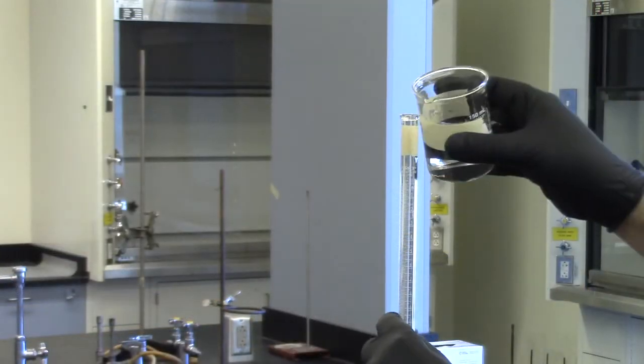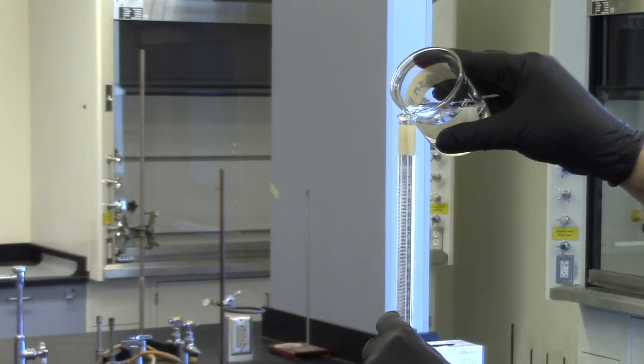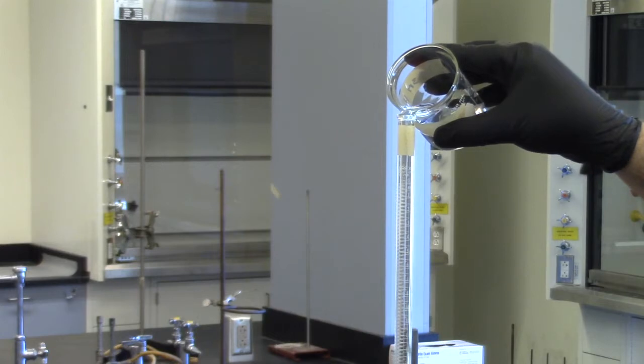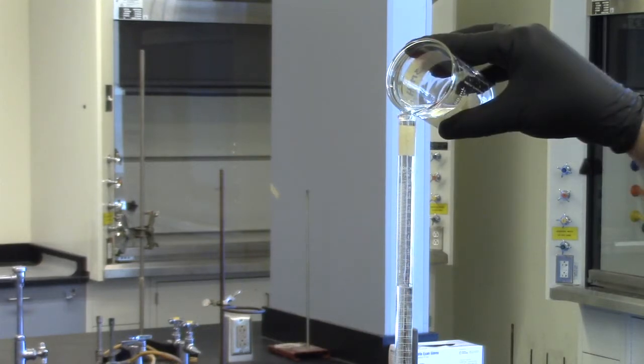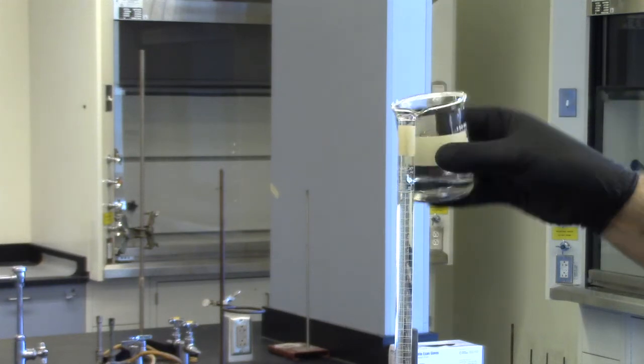Now that the burette is rinsed, add HCl solution to the burette. Fill it close to the top line, which is zero. If you go past zero, drain some down into the waste beaker. Be sure to record your initial volume.